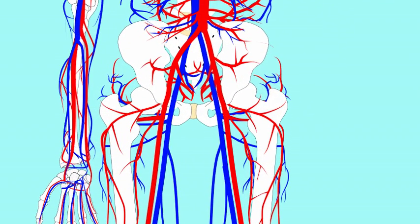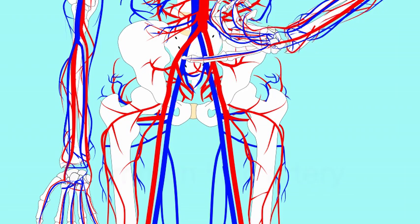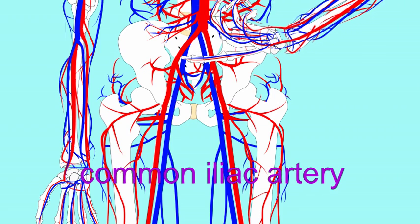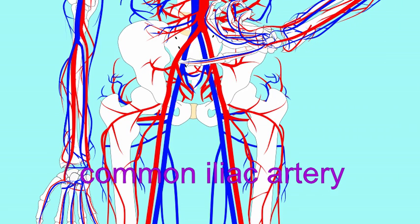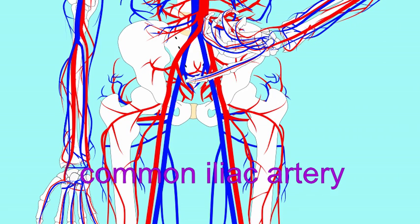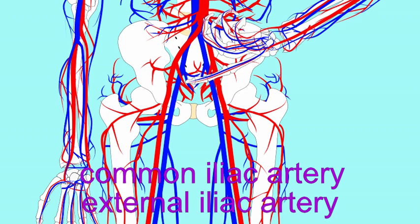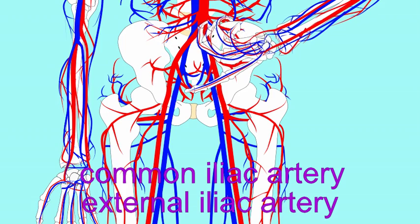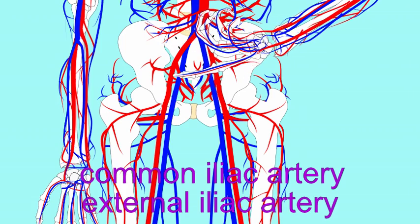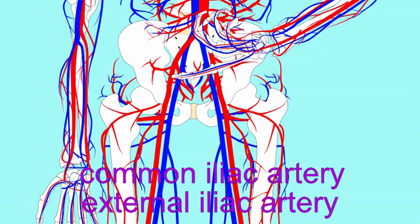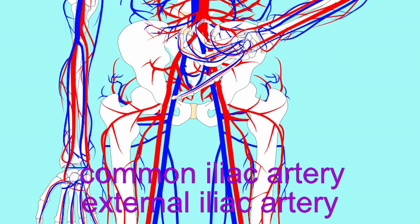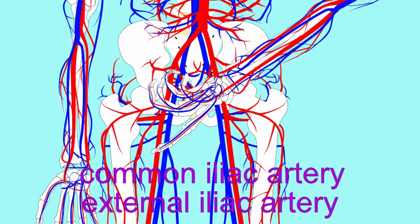Around the area of the hip, the abdominal aorta splits into the common iliac arteries. After the internal iliac arteries diverge, the common iliac then proceeds as the external iliac artery, and it leaves the pelvic body cavity and enters the leg.